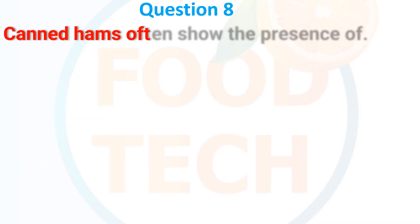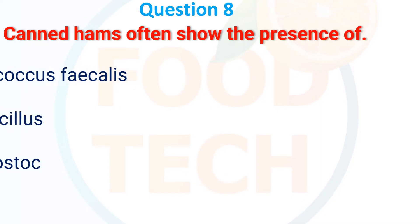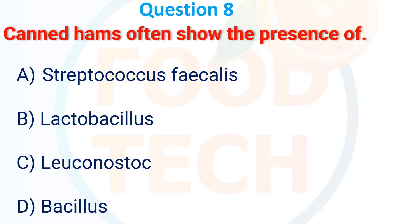Canned hams often show the presence of: A, Staphylococcus and Bacillus; B, Lactobacillus; C, Leuconostoc; D, Bacillus. The answer is A, Staphylococcus.